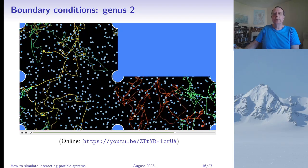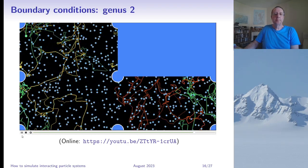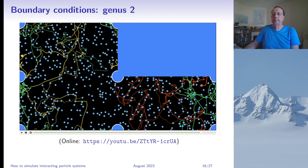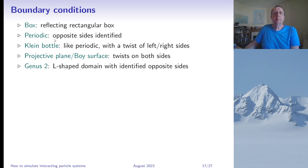Here's a list of boundary conditions I've used: a reflecting confining box, periodic boundary conditions, Klein bottle (periodic with a twist on left/right sides), projective plane or Boy surface (twists on both sides), and an L-shaped domain with identified opposite sides giving a genus-2 surface. To implement these, you define the hash grid neighbor relationships accordingly, take care of interactions across boundaries, and for Klein bottle or projective plane conditions also apply twists to angles. For graphical representation, particles that cross a boundary must be drawn multiple times, possibly with different orientations.